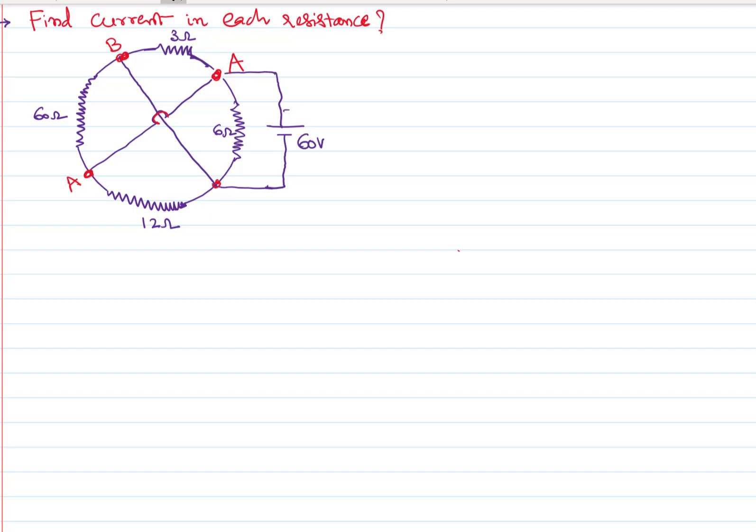If you call this point as B, be careful - there is no connection at the junction, there is no intersection at the junction. Therefore, this also becomes the same point B. So by labeling them with A's and B's, we have understood something.